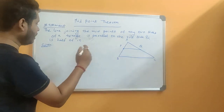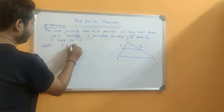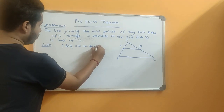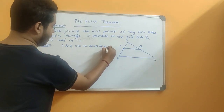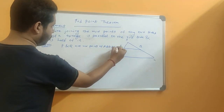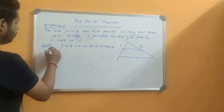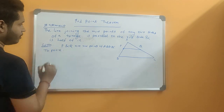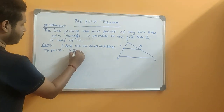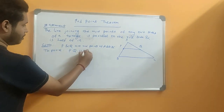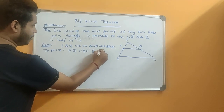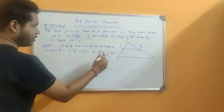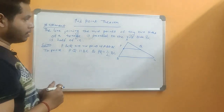So let's write the given information: P and Q are the midpoints of AB and AC. Now what is our target to show? We need to show that PQ is parallel to BC and PQ is equal to half of BC. This is our main target.